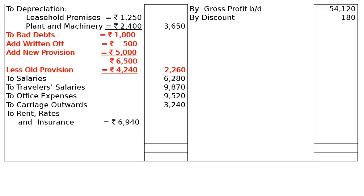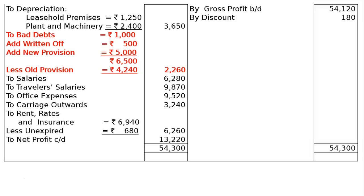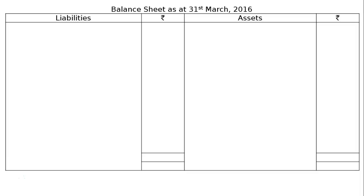The unexpired insurance of rupees 680 will be shown as a current asset in the balance sheet. After deducting rupees 680, the final column figure for rates and insurance is rupees 6,260. The credit side totals to rupees 54,300. Deducting all expenses, the net profit carried down is rupees 13,220. Next is the balance sheet as at 31st March 2016.